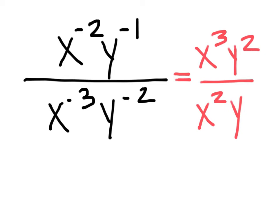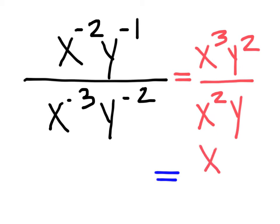Simplifying further: x to the third over x squared in the numerator gives x to the first, since 3 minus 2 equals 1, which is just x. And y squared over y to the first gives y to the first, which is just y. So the simplified result is x over y.